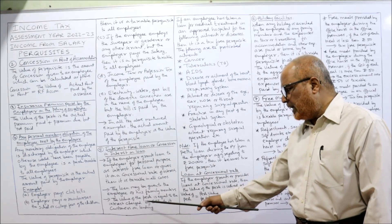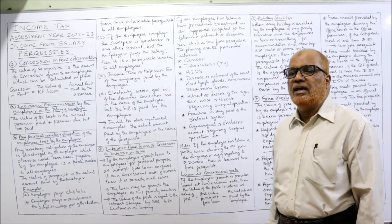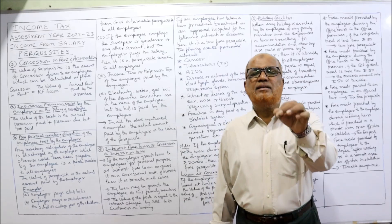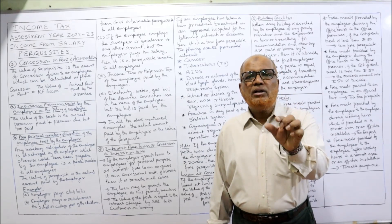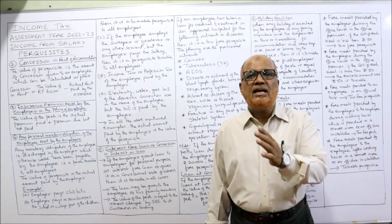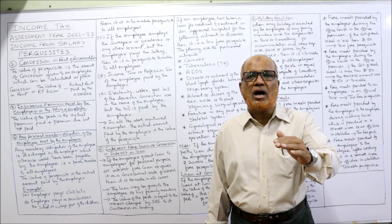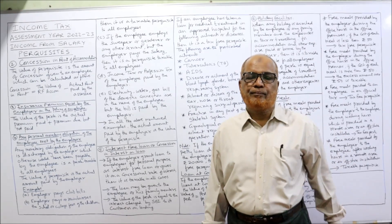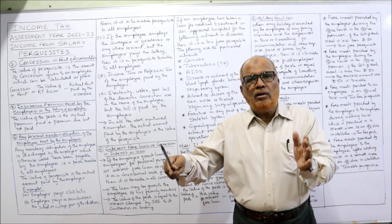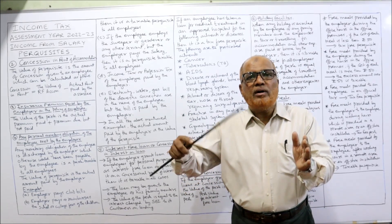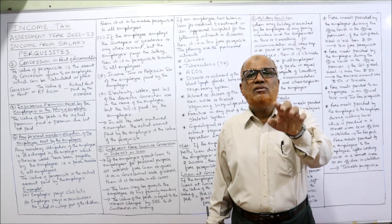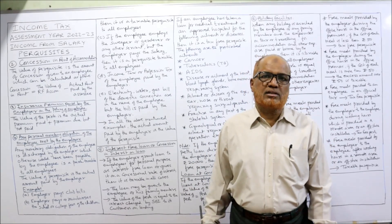The value of this perquisite is determined by the rate of interest charged by SBI — the State Bank of India. Whatever rate of interest SBI charges on its lending to customers, that rate is used to calculate the value of the perquisite on the interest-free or concessional loan provided by the employer.